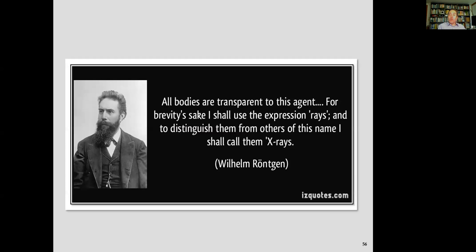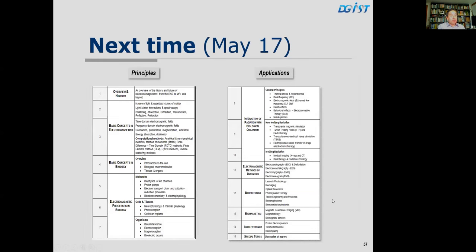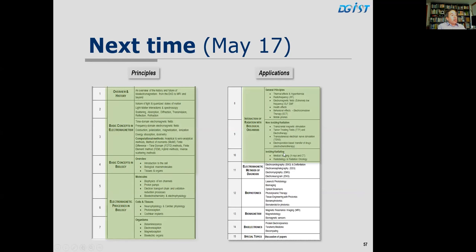To quote Wilhelm Roentgen: 'All bodies are transparent to this agent. For brevity's sake, I shall call them rays' — and to distinguish them he called them x-rays, which is the origin of that term. We have now covered the interaction of radiation with biological organisms in Parts 1, 2, and 3. Next week we will focus on electromagnetic methods of diagnosis beyond imaging, including the electrocardiogram (ECG), electroencephalogram (EEG), electromyography, and electroneurogram.